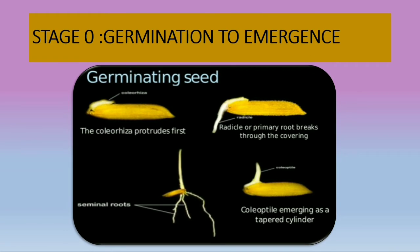Stage zero is germination to emergence. The germinating seed has the coleorrhiza which produces the first root, and the radical or primary root breaks through the covering. Seminal roots and coleoptile emerge as a tapered cylinder. The embryo starts to germinate; variety, temperature, water, and air affect the growth. This stage ends three days after germination.